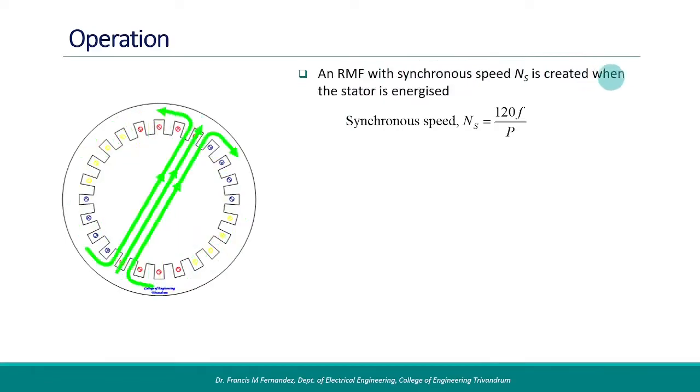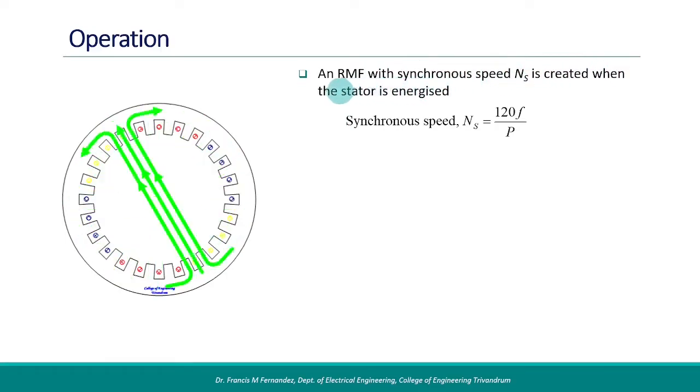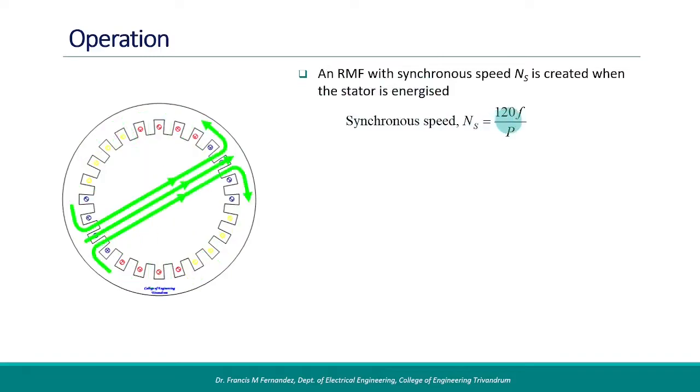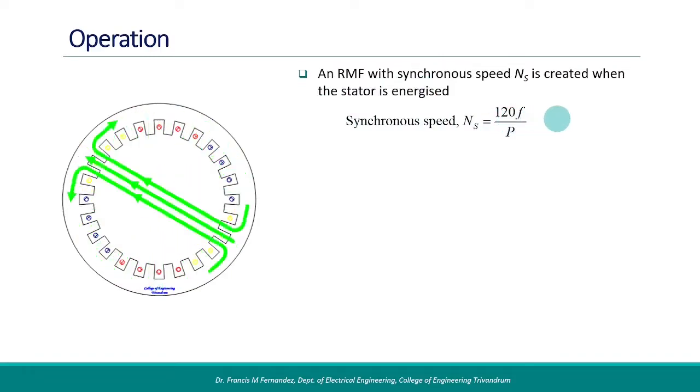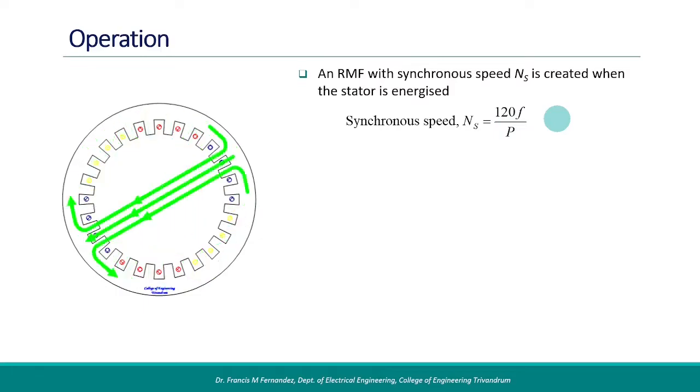The speed of rotation of the RMF will be at the synchronous speed, Ns, given by the expression 120F by P, where F is the supply frequency, and P is the number of poles for which the stator is wound.